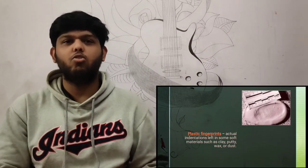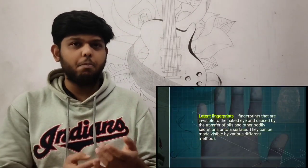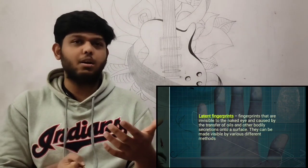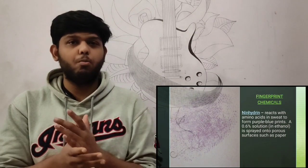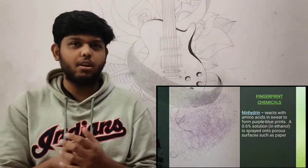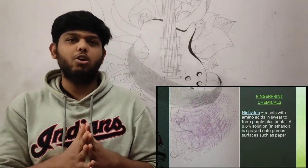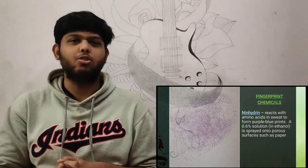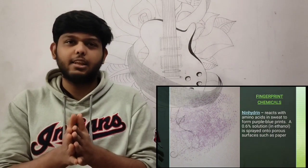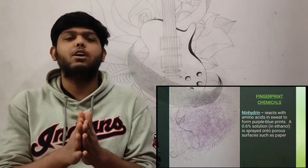Different permissible methods for development: First is Ninhydrin. Ninhydrin is applied by dipping or spraying on porous surfaces like paper. It will form a purple or blue color, developing the latent fingerprint. Ninhydrin contains amino acid chemicals. Amino acid reacts with your sweat because sweat contains protein. When it reacts with the amino acid, it develops blue and purple colors, making the fingerprint visible.